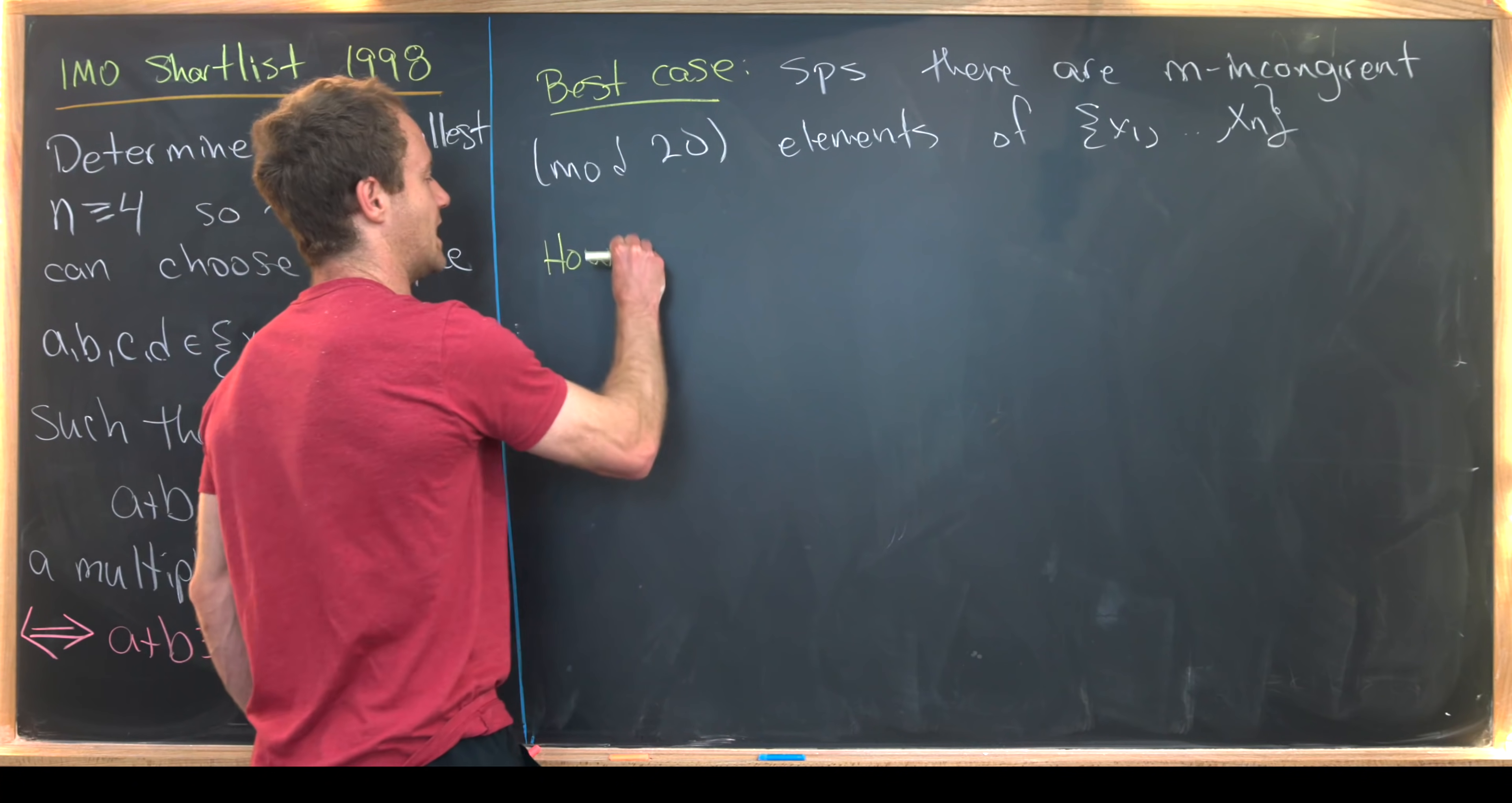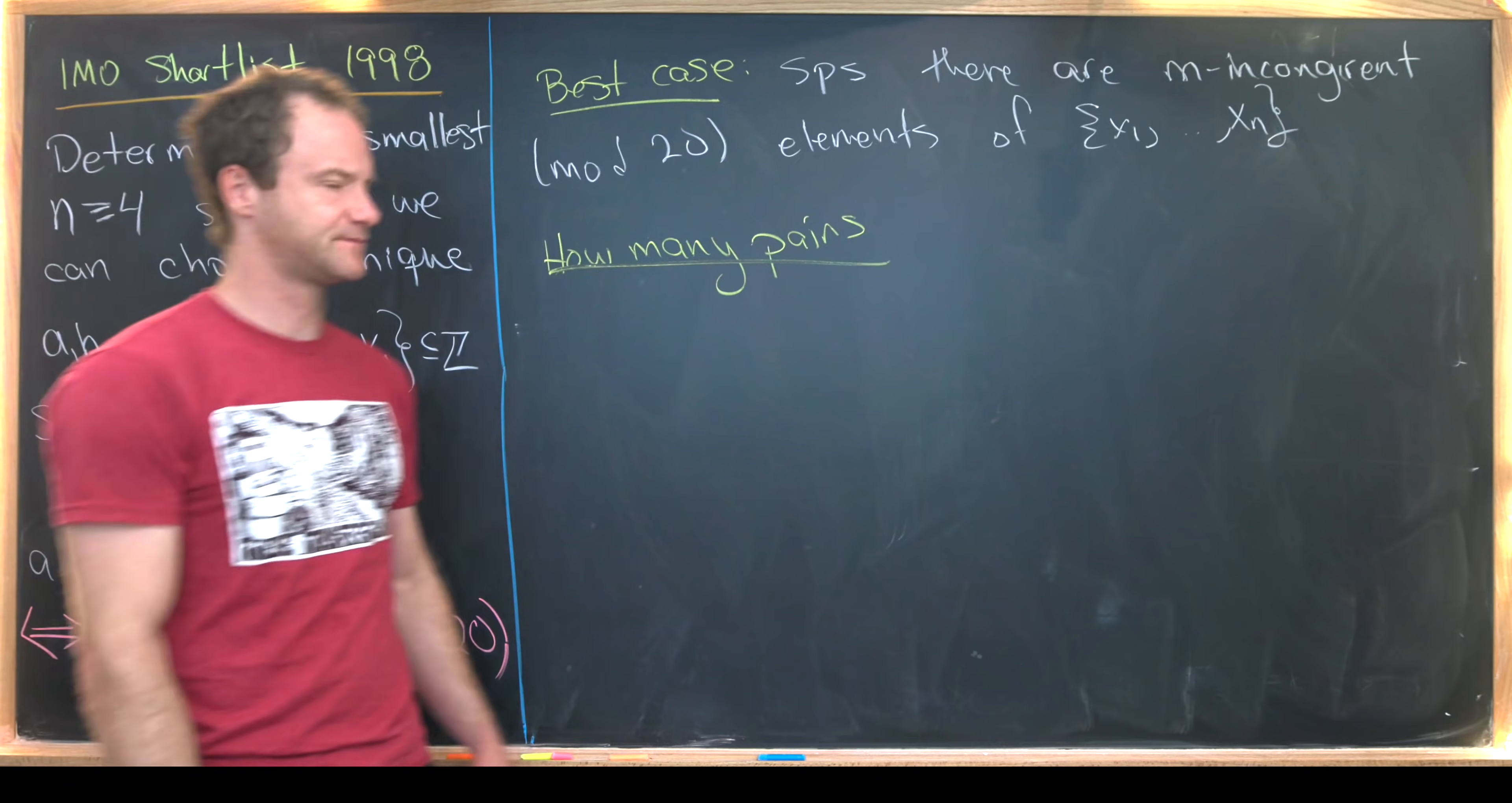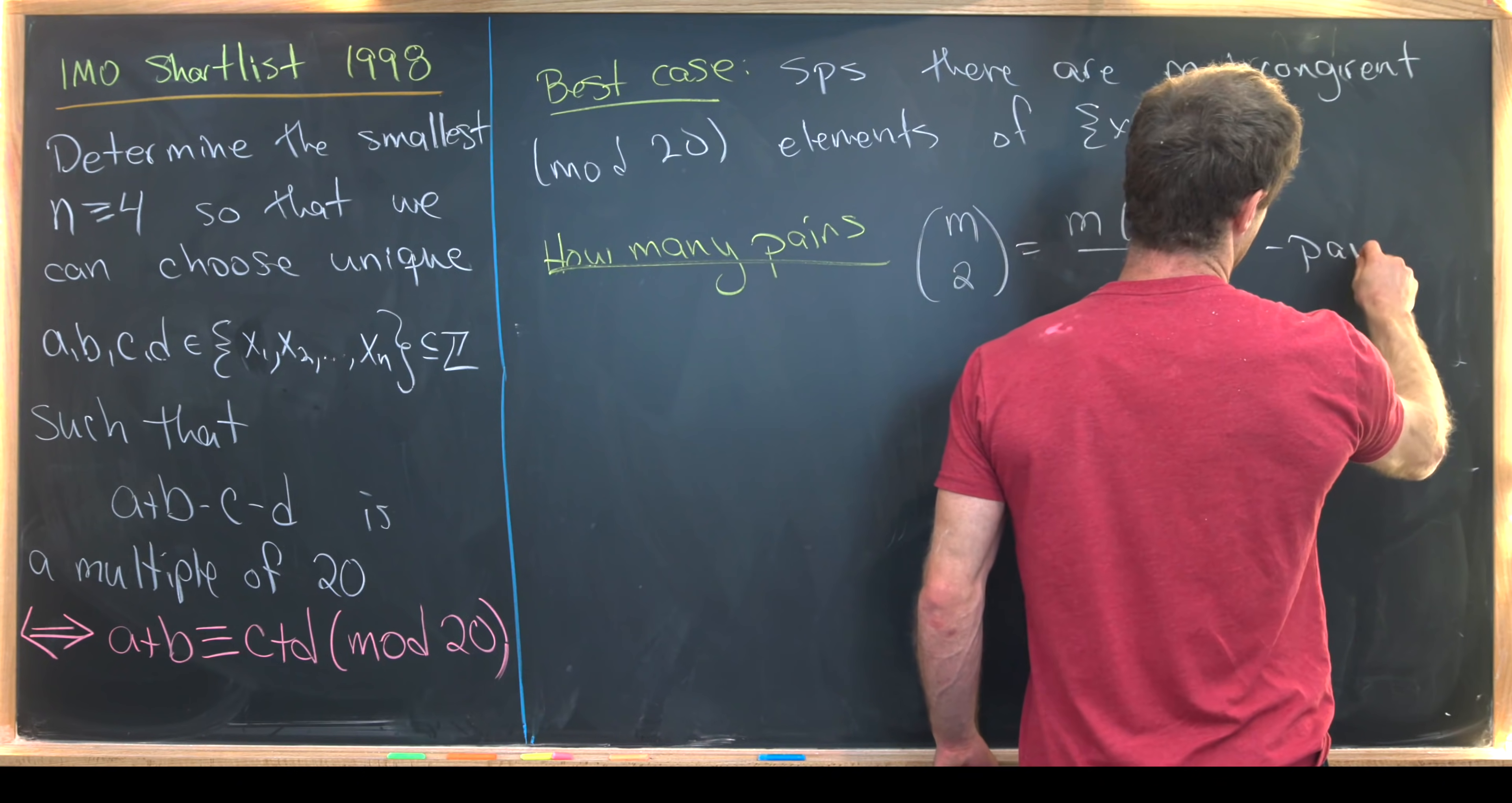So how many pairs? What I mean by pairs? Again, pairs of the incongruent mod 20 elements. So that's just m choose 2, right? So that's going to be m choose 2, which is equal to m times m minus 1 over 2 total pairs.